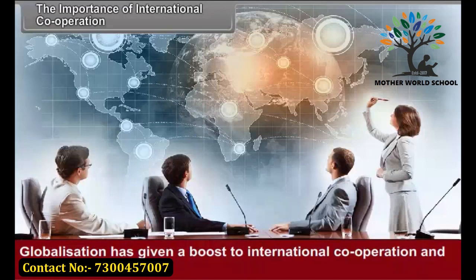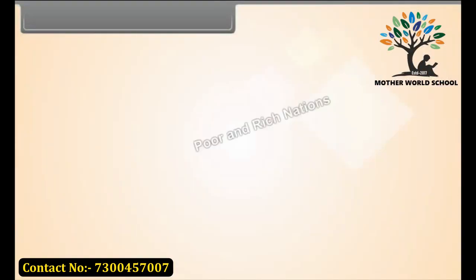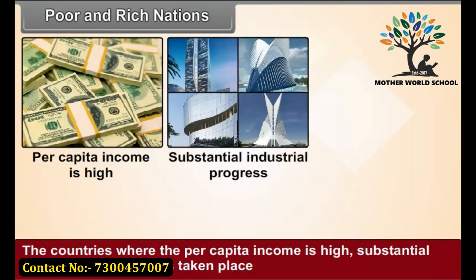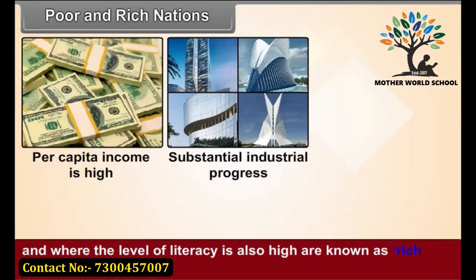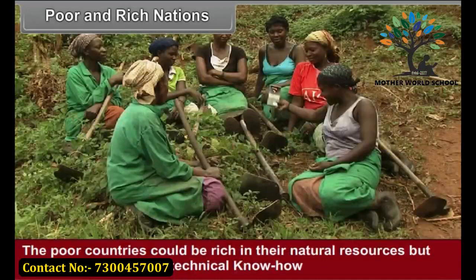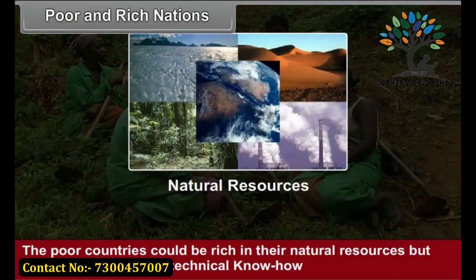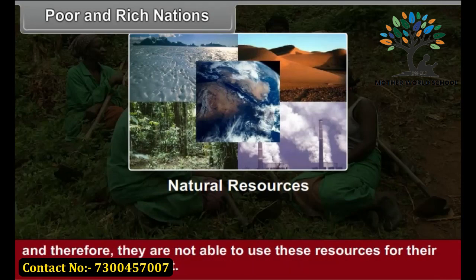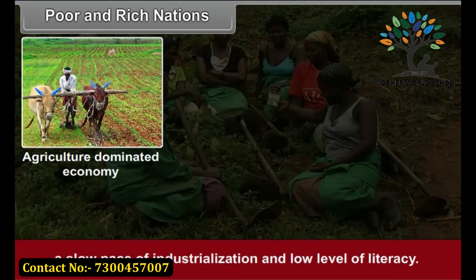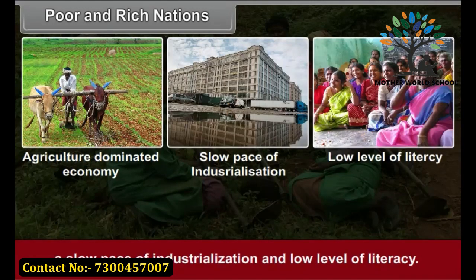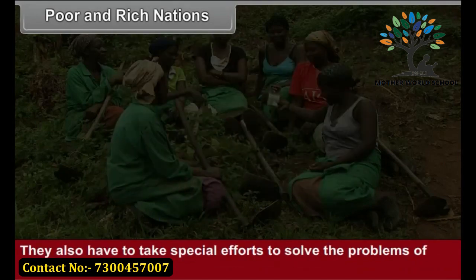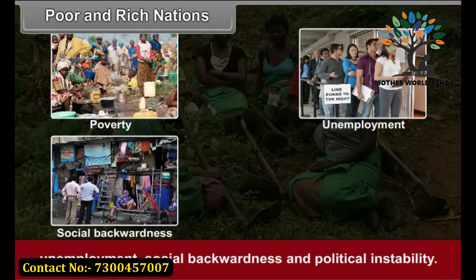Globalization has given a boost to international cooperation and increased its scope. The countries where the per capita income is high, substantial industrial progress has taken place, and where the level of literacy is also high are known as rich nations. They enjoy a relatively high standing on the Human Development Index. The poor countries could be rich in their natural resources but they lack material and technical know-how and therefore they are not able to use these resources for their economic development. The poor nations have an agriculture dominated economy, a slow pace of industrialization and low level of literacy, and are placed low on the Human Development Index. They also have to take special efforts to solve the problems of poverty, unemployment, social backwardness and political instability.